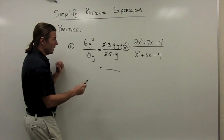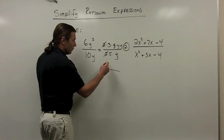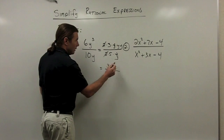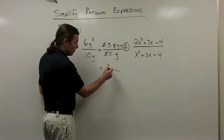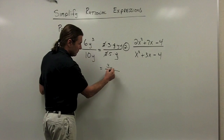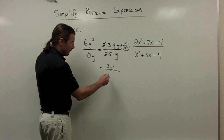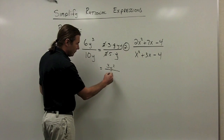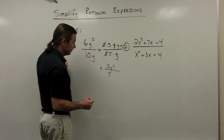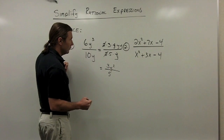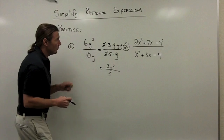In the numerator I have 3, and then y times y, which gives me y squared. In the denominator I just have 5. So the simplified answer is 3y²/5.